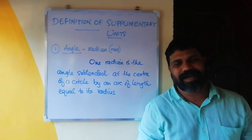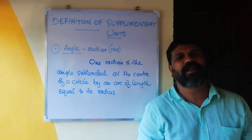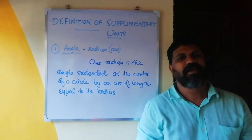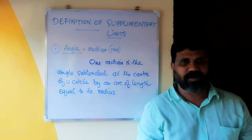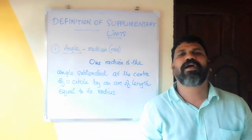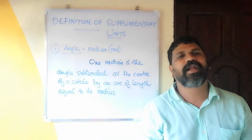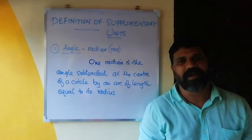There are two supplemental units in the SI system: one is angle, and two is solid angle.